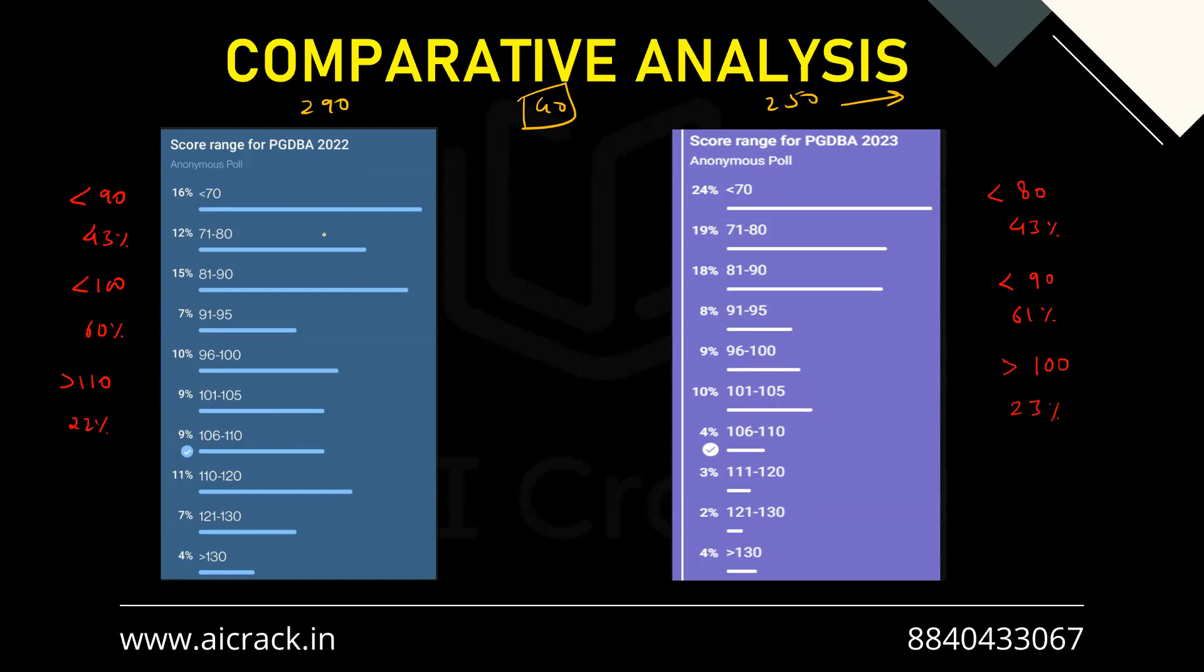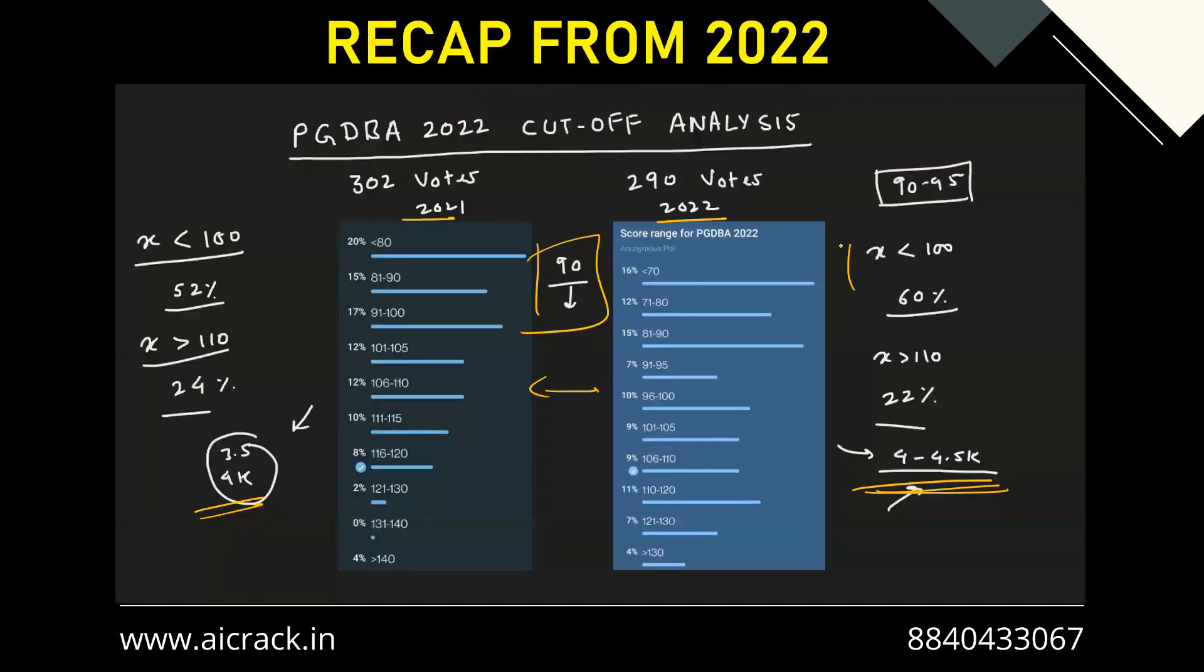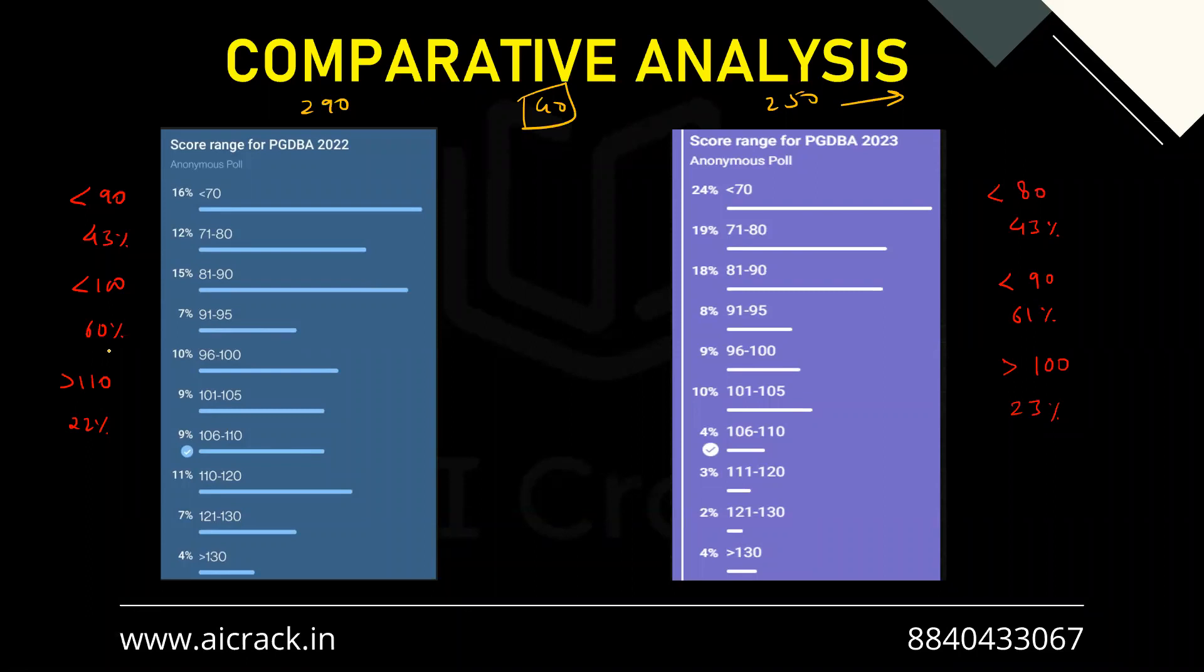If I take a similar pathway here, I took less than 100 as the first point in the previous analysis. But if I take less than 100 here, I'll be getting 78%, which is huge. I cannot compare 78% and 60%. I need certain points where I can do one-to-one comparison.